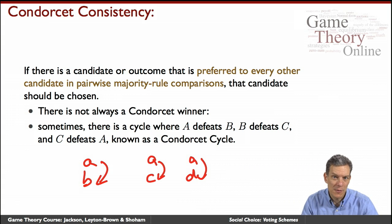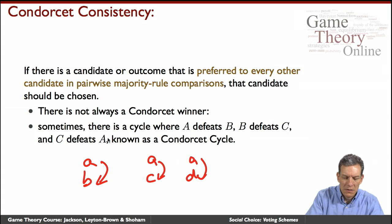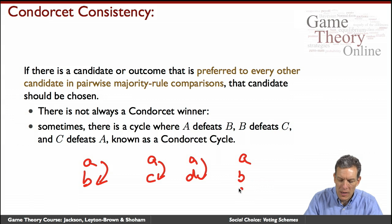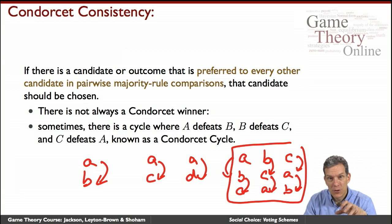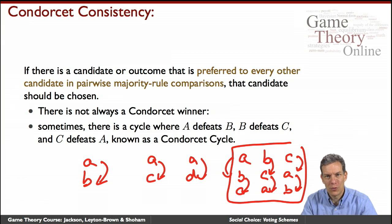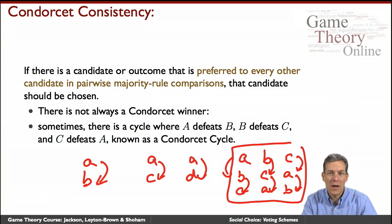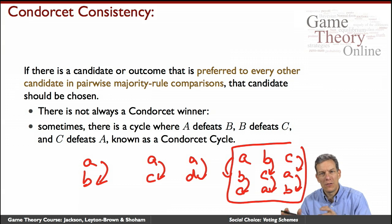However, a Condorcet winner doesn't always exist — there can be a cycle. For example, with three alternatives: person one likes A, B, C; person two likes B, C, A; person three likes C, A, B. A is preferred to B by a majority, B is preferred to C by a majority, but C is also preferred to A by a majority — a cycle. This shows there can be problems with voting rules in terms of coherence, and Condorcet cycles are an important part of that. Next, we'll talk about properties of voting rules in more detail.